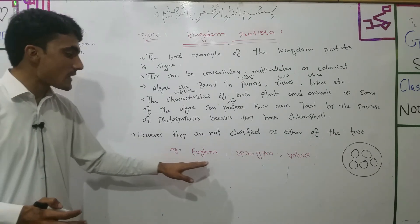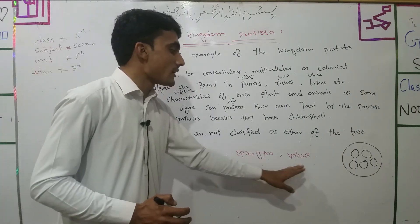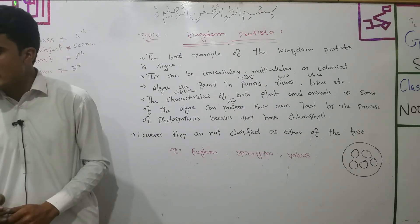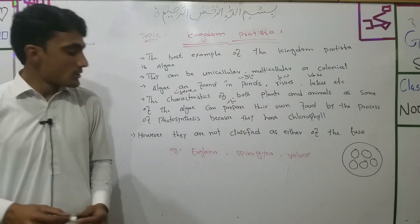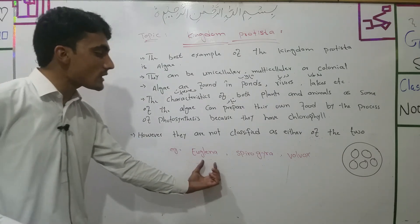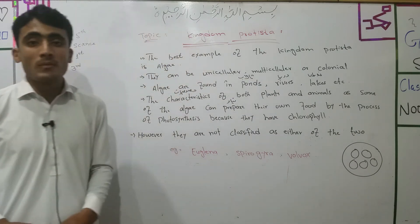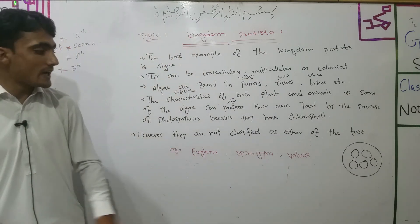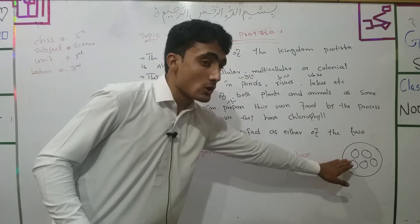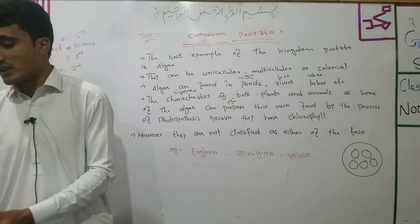Some examples of algae are: Euglena, Spirogyra, and Volvox. Euglena is unicellular. Spirogyra is multicellular. Volvox is present in a colonial form.